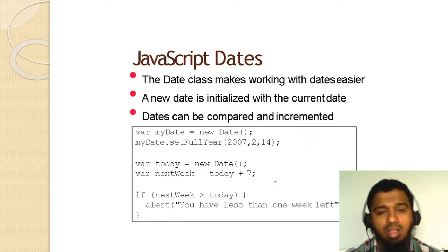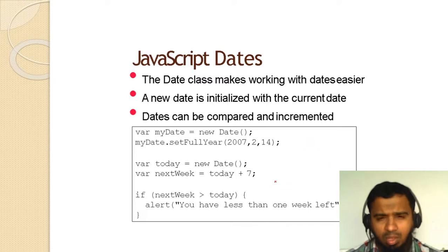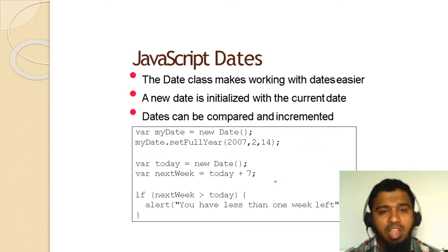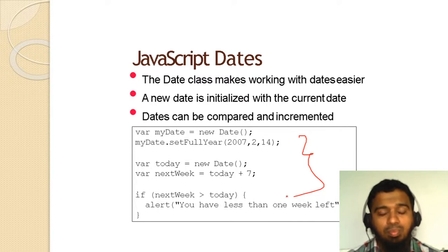For the Date object: the Date class makes working with dates easier. A new Date is initialized with the current date. Dates can be compared and incremented. When you add this Date code in your HTML page it will work easily.